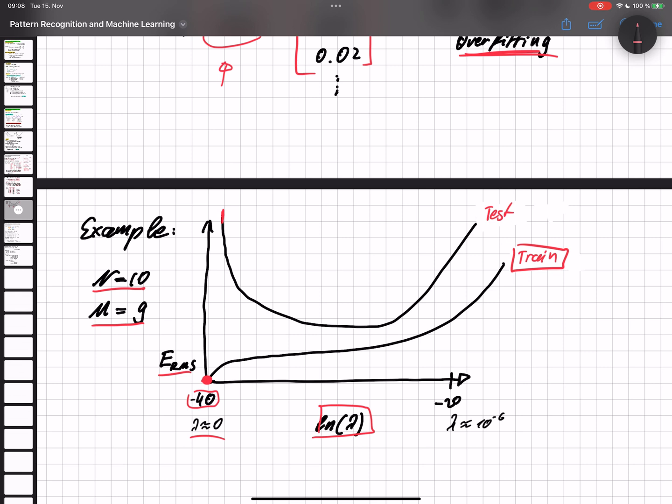As soon as we start to increase lambda, we're increasing the train error as well. So now, in this area, our polynomial does not go through each and every data point, but it's fairly close. And we see that we have a decline of our error in our test set. So we're getting better, better, and better.